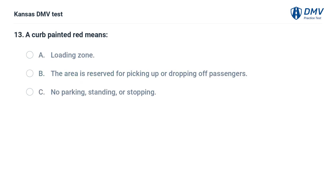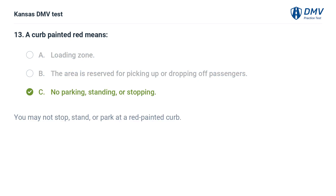A curb painted red means: A. Loading zone. B. The area is reserved for picking up or dropping off passengers. C. No parking, standing, or stopping. The answer is C. No parking, standing, or stopping. You may not stop, stand, or park at a red painted curb.